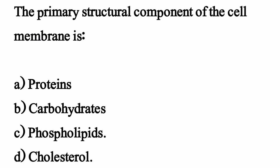The primary structural component of the cell membrane is — the correct option is Option C: Phospholipids.